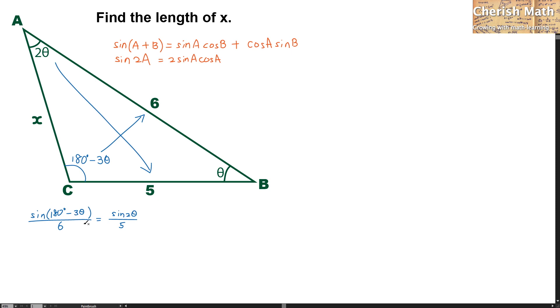Now, I would just have to expand this by using the formula stated above here. It turns sin 180 degrees cos 3 theta minus cos 180 degrees sin 3 theta divided by 6. And over here, I am getting 2 sin theta cos theta divided by 5.